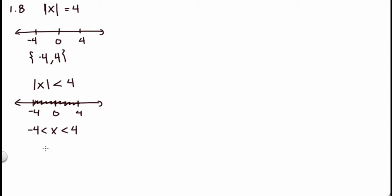And then the third case that we have is if absolute value of x is greater than 4, then that means that it's either less than negative 4 or greater than 4. If I want the distance to be at least 4, then x is less than negative 4 or x is greater than positive 4.